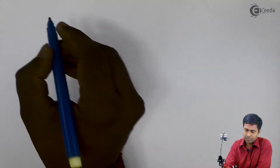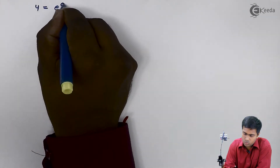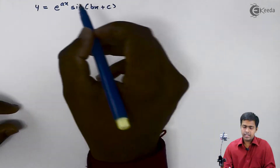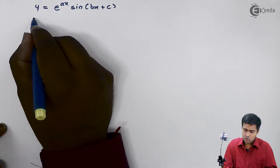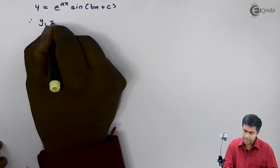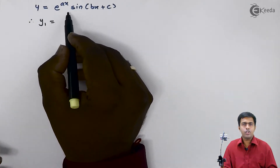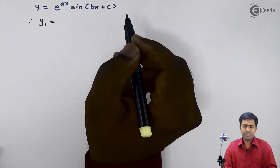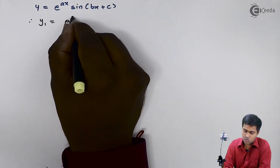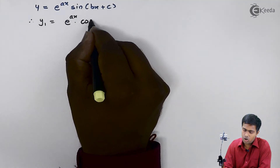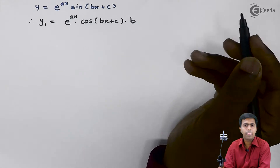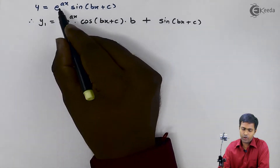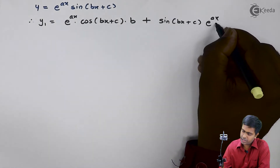Now let us see one more function. The function is y equal to e raised to ax into sin of (bx plus c). To find out the nth derivative, we will start with y1 again. y1 is the derivative of this term. Here we are having two functions, so we will use the product rule formula u into v. By using this formula, we get e raised to ax as u, derivative of sin gives cos(bx plus c) into b, plus sin(bx plus c) as it is, times derivative of e raised to ax which is e raised to ax into a.